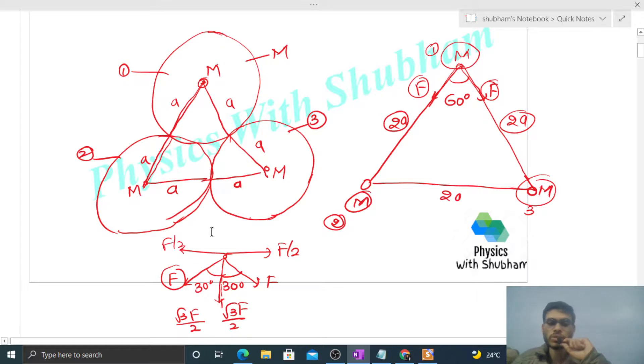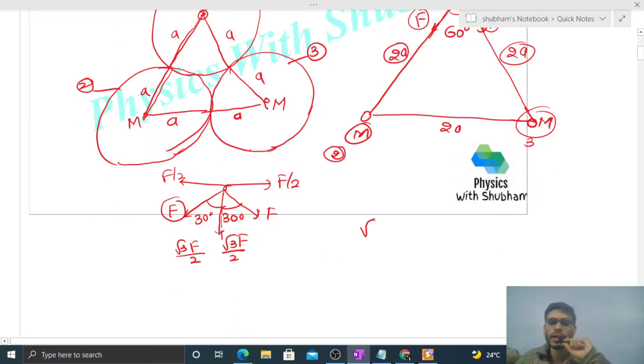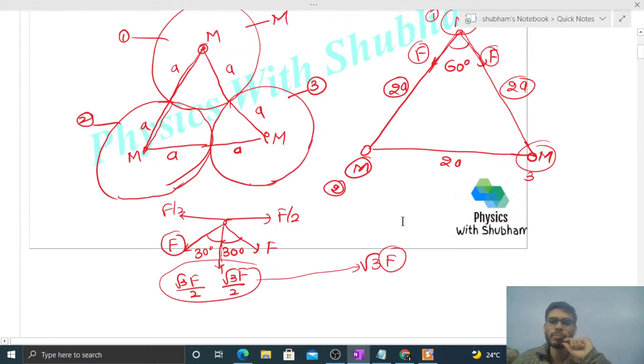So the net force that comes out will be √3 times F. Adding these two gives √3 times F. And we know the value of F.